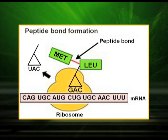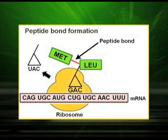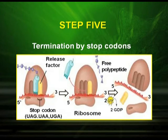The picture shows detailed information about how the peptide bond is formed between two amino acids. The first amino acid is methionine, which is linked to the second amino acid with the help of a peptide bond.